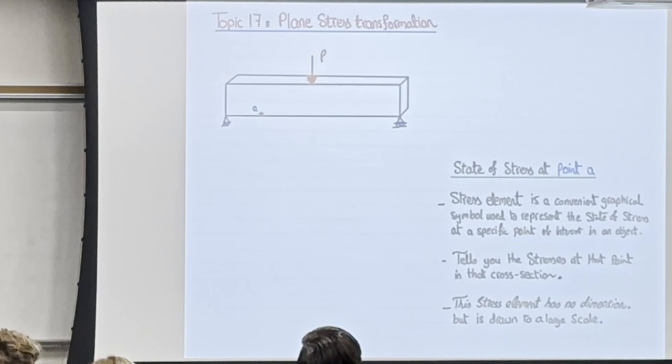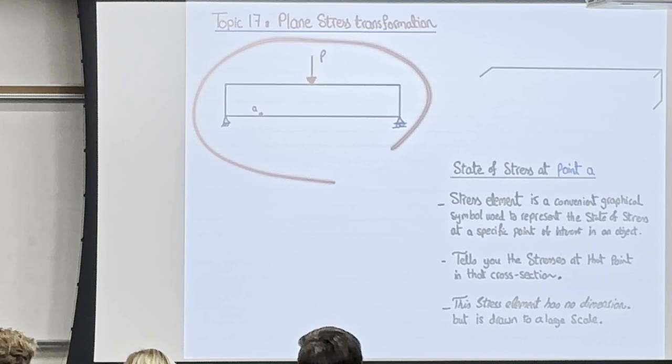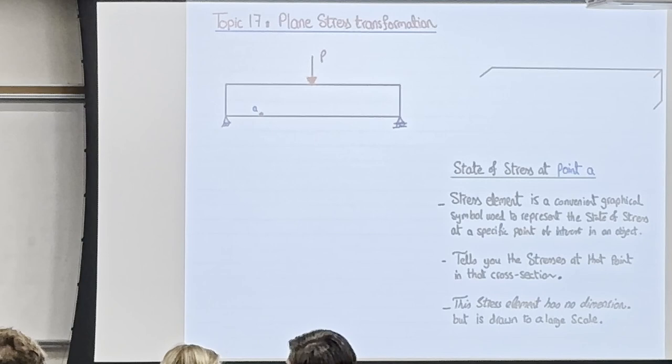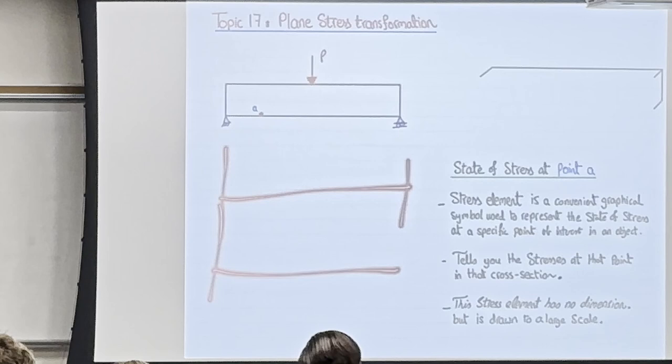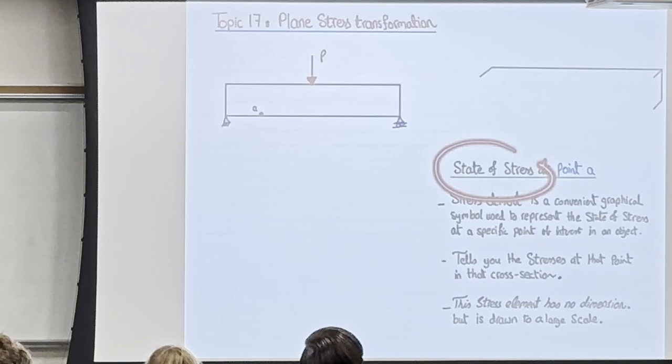You probably know this represents a beam — I drew it in 3D but if I draw it in 2D, this is a beam. For any point in the beam, we can find the forces by drawing the internal forces diagrams: axial force diagram, shear force diagram, bending moment diagram. But now it's different — I'm asking what are the stresses at point A, the state of stress at A, or draw a stress element at A.